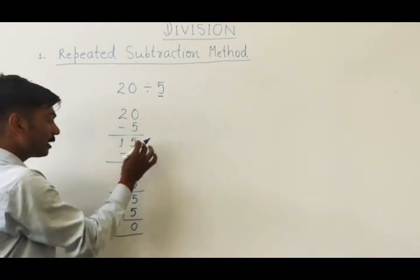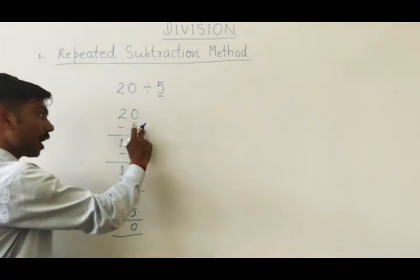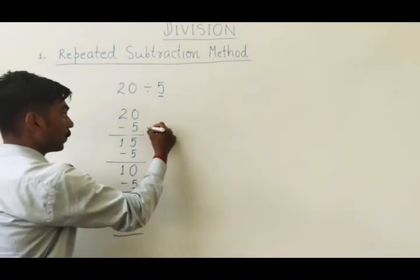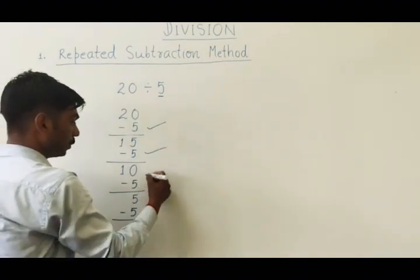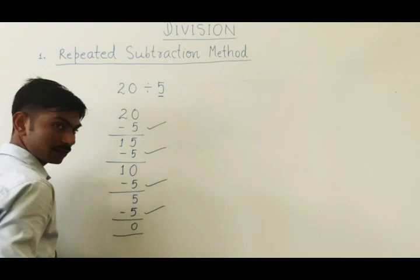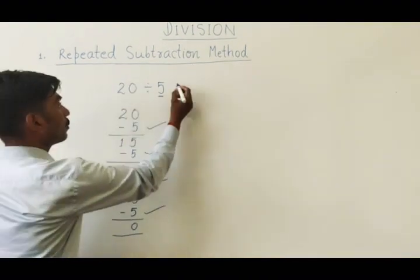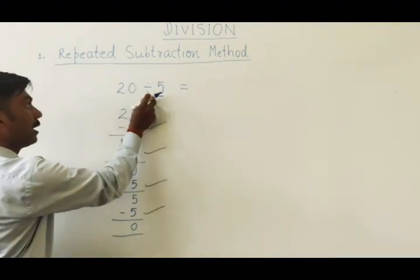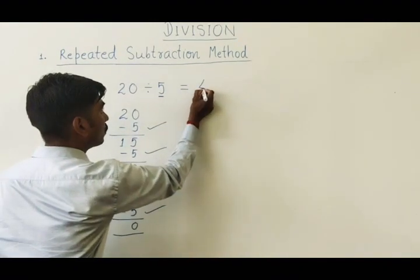So how many times we have to subtract 5 from 20? 1, 2, 3, 4 times. So the answer of this problem will be 20 divided by 5 equals 4. Means if we divide 20 in the group of 5 we will get 4.